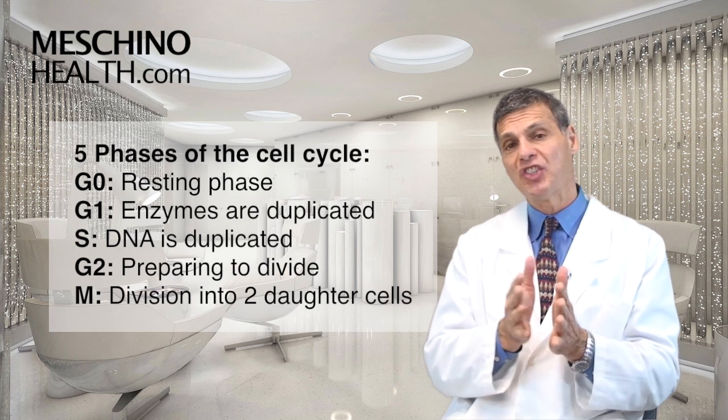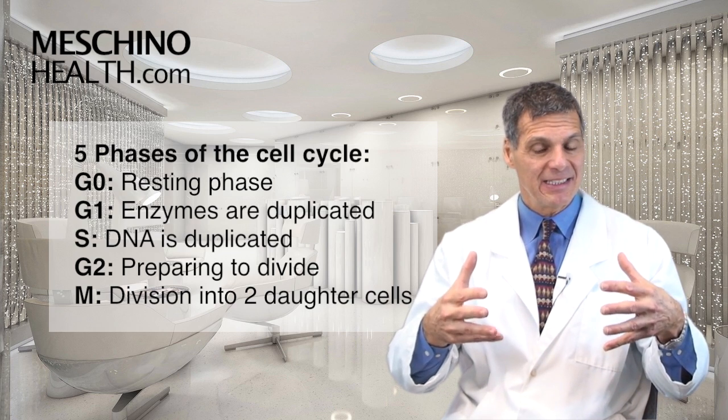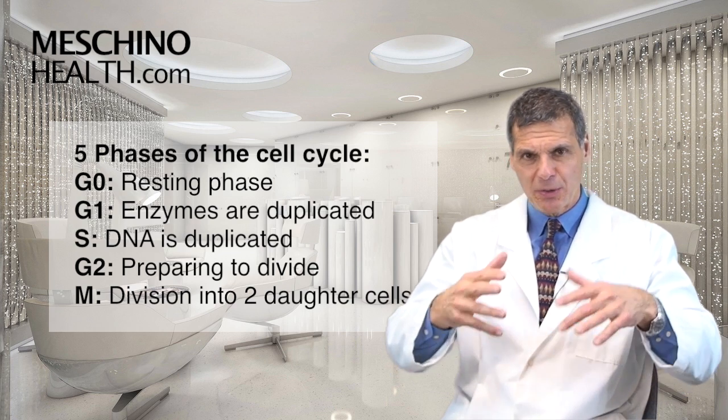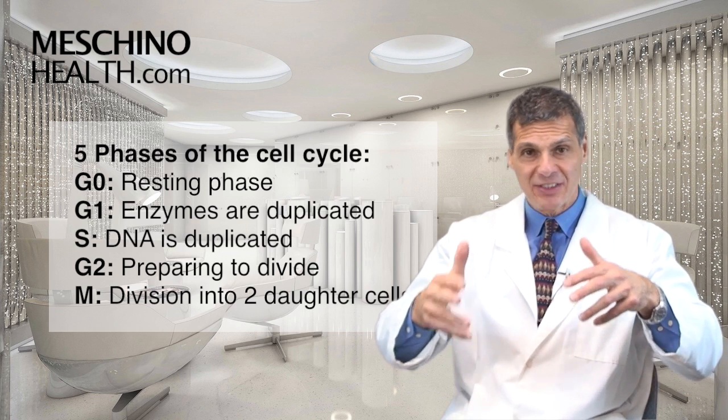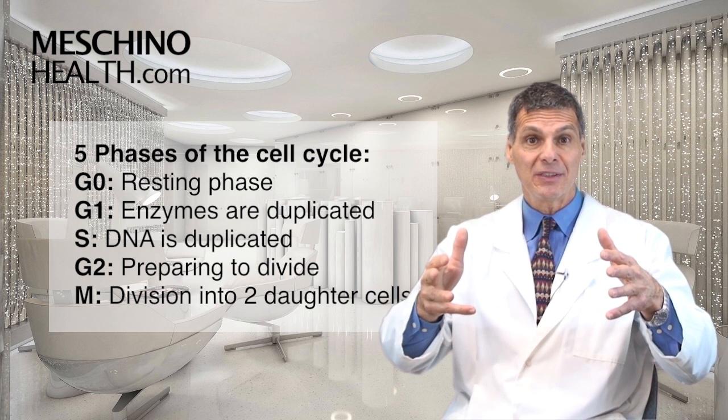Then there's the G1 phase. That's when the cell is now committed to dividing, so it starts to duplicate a bunch of enzymes that it's going to need for cell division.